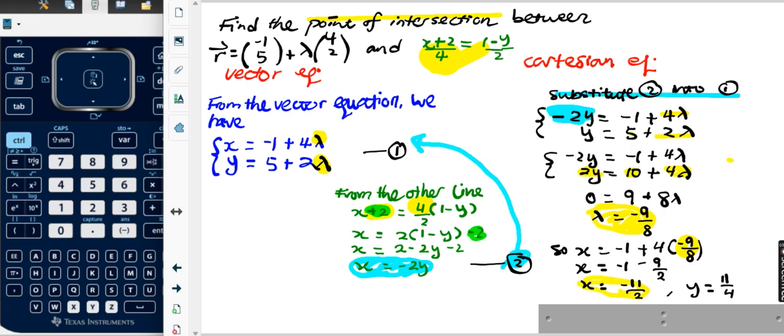And how about y? Well, from x equals negative two y, therefore y equals x over negative two. So if x is negative eleven over two, y must be eleven over four. The point of intersection is negative eleven over two comma eleven over four.